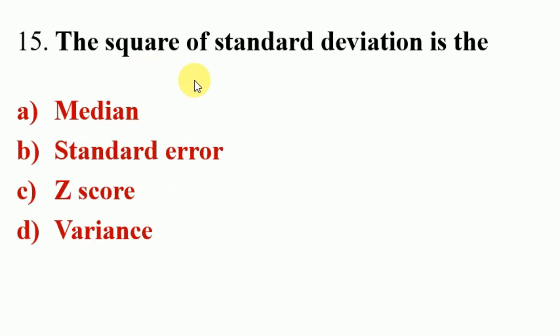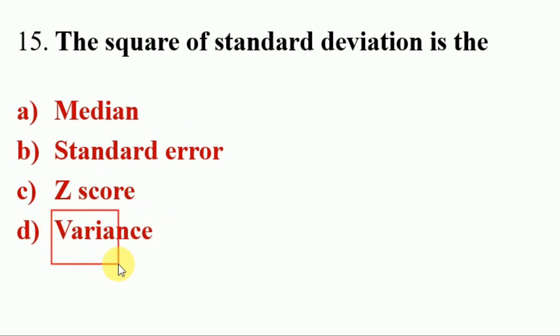Next question. The square of standard deviation is — Options A. Median, B. Standard error, C. Z-score, D. Variance. Answer is D. Variance. So the square of standard deviation is Variance.